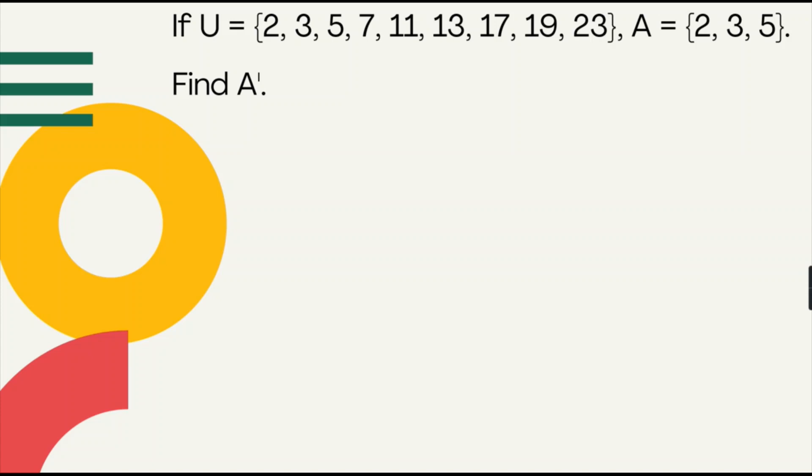Okay, let's say for example, if set U has elements 2, 3, 5, 7, 11, 13, 17, 19, and 23, while set A has 2, 3, and 5, find the A complement.